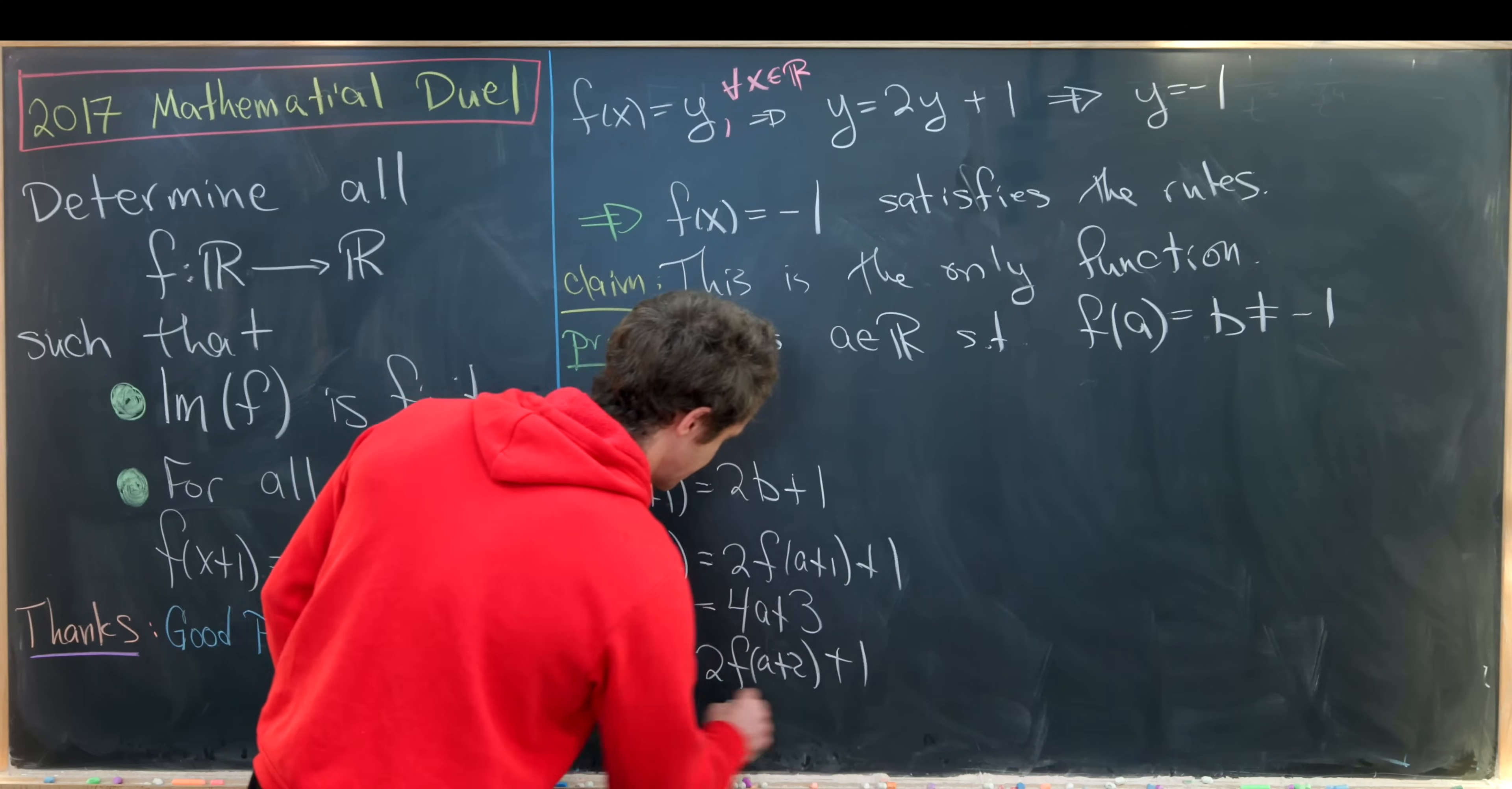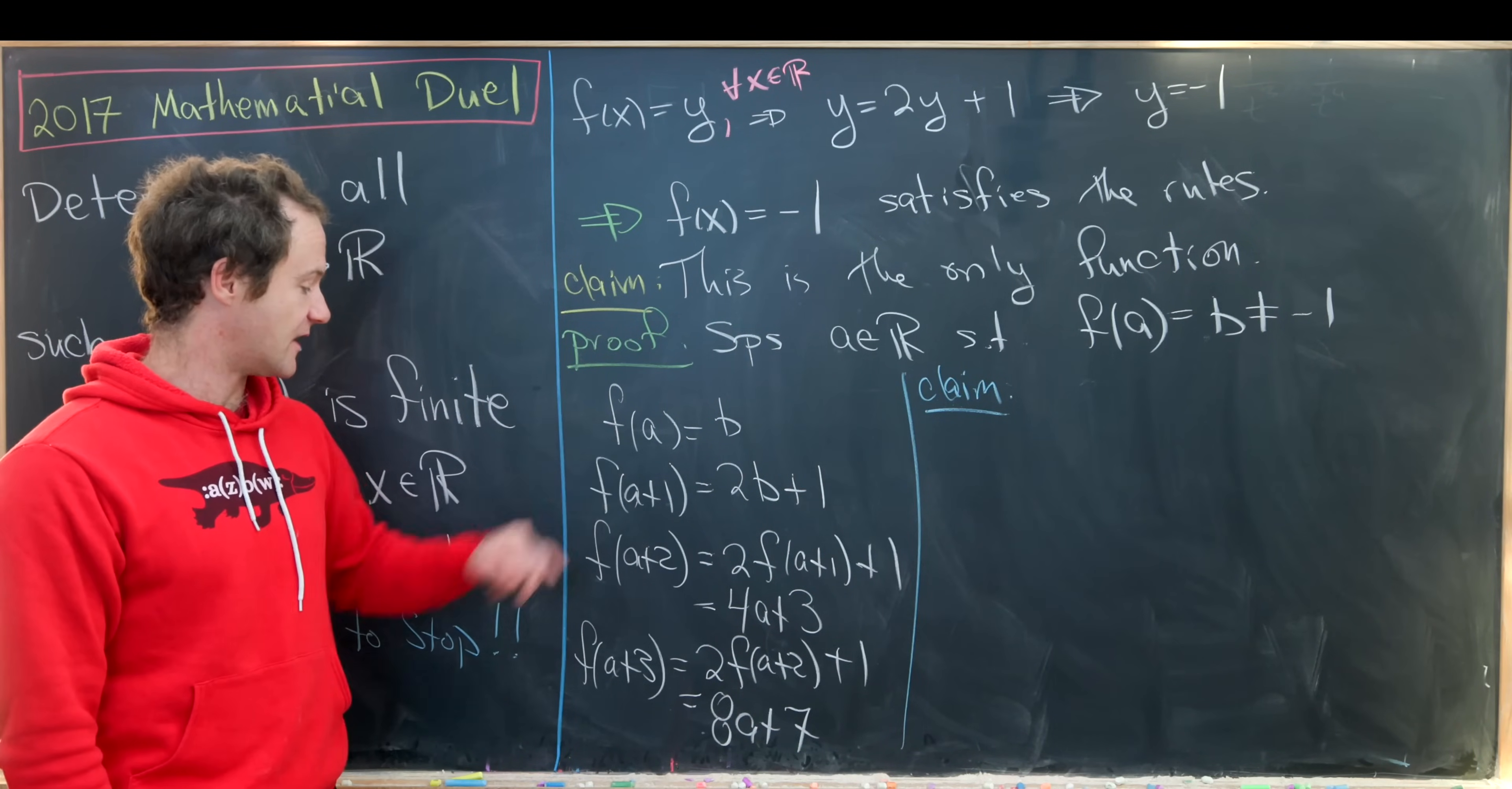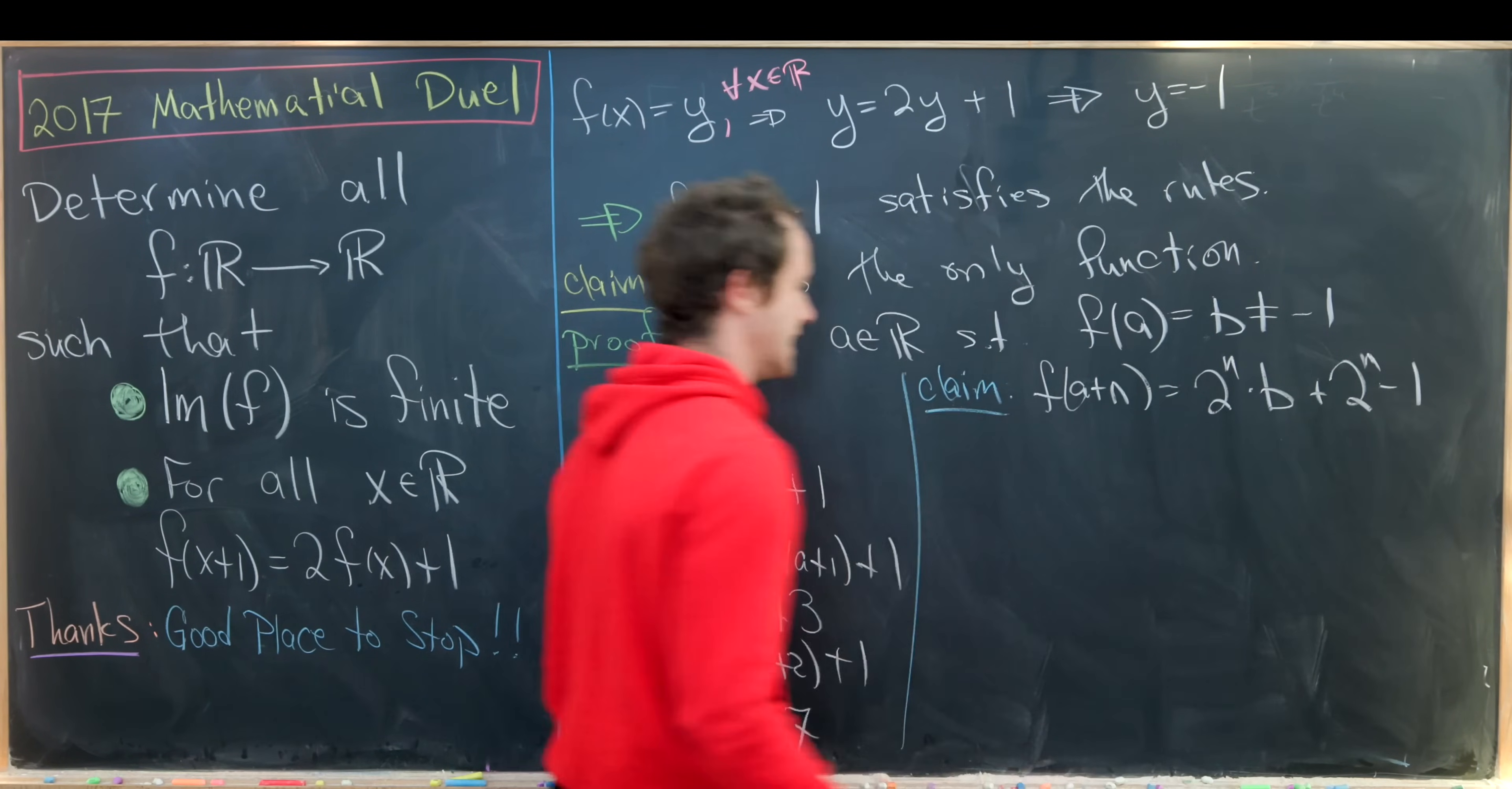which is inside of this proof as to the structure of f(a) plus something. So we have f(a+n) is equal to 2^n times b plus 2^n minus 1, and we can see that structure arriving at each of these steps. And how could we prove this claim? Well,